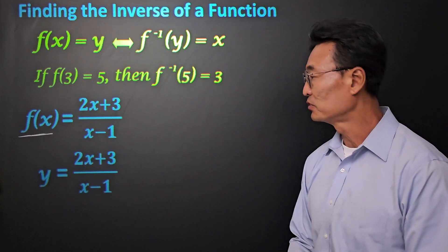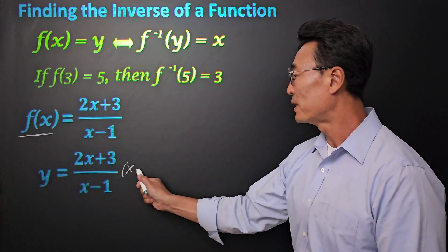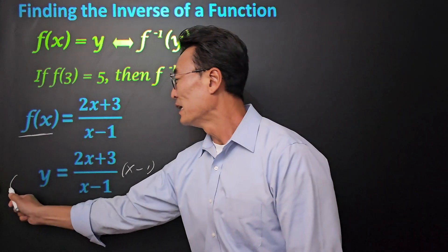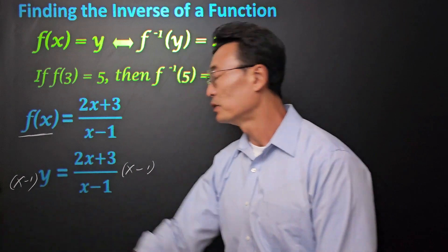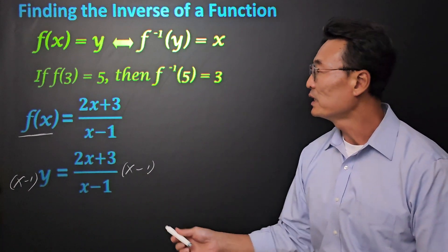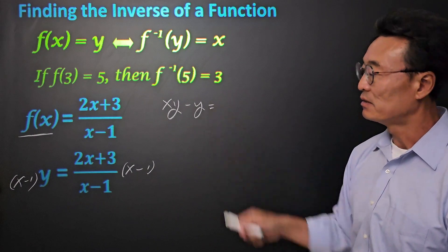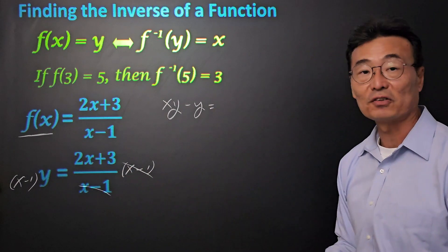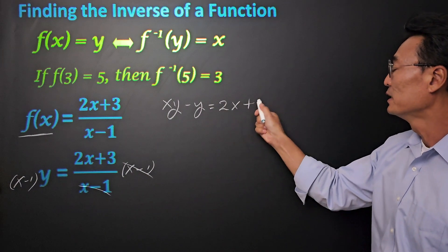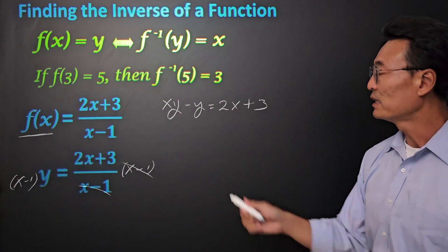Next, we want to solve for x. To do that, we're going to multiply by x minus 1 on both sides of the equation where we get xy minus y is equal to, x minus 1 is cancelled out of course, then we have 2x plus 3 left on the right side.